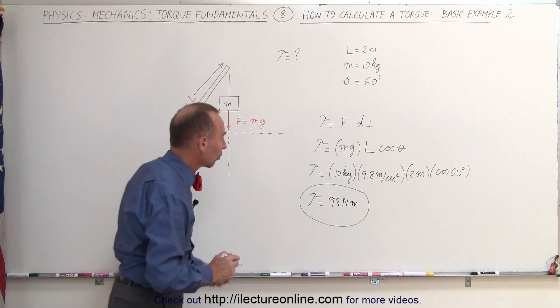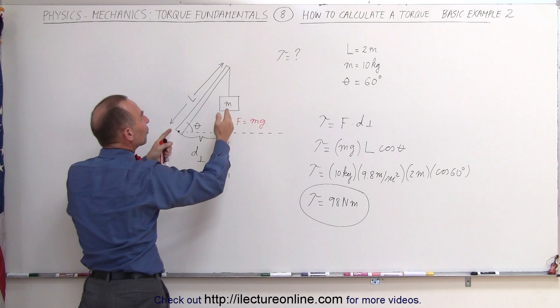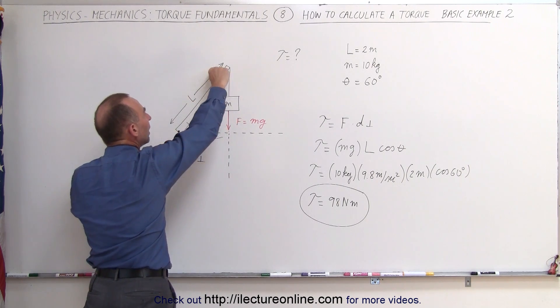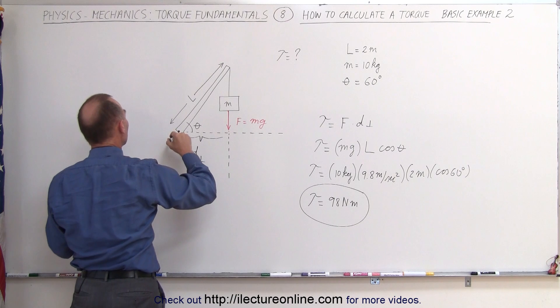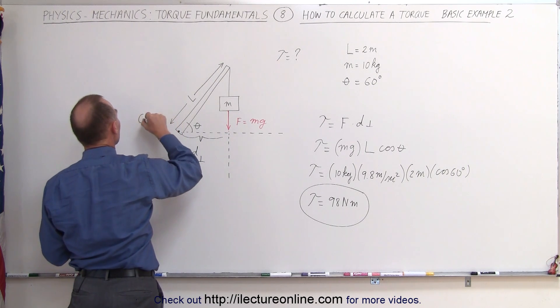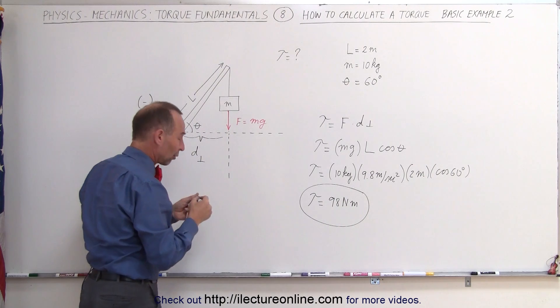Now let's find the direction of the torque. Notice, if this was the only force acting on this beam, it would cause the beam to rotate in a clockwise direction. Which means we have a clockwise torque, and a clockwise torque is also known as a negative torque.